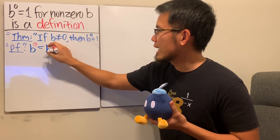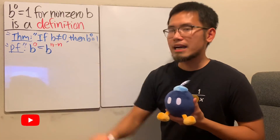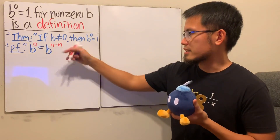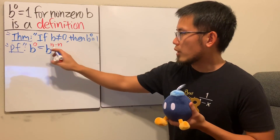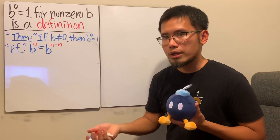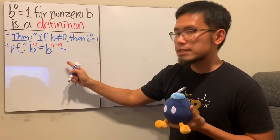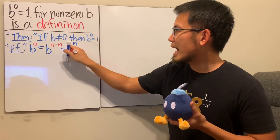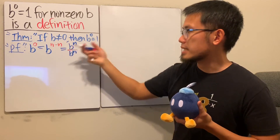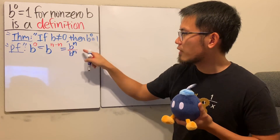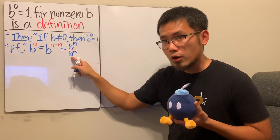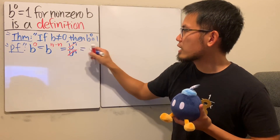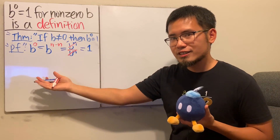We can write b to the zero as b to the n minus n. Of course n minus n equals zero, and some might write this as b to the second minus the second power. If n is a positive whole number, by the rule of exponents you write this as b to the nth power divided by b to the nth power. Since b is not equal to zero, the denominator is not zero, so we can cancel them out and get one.